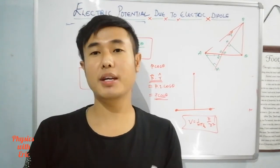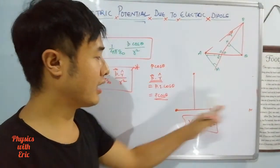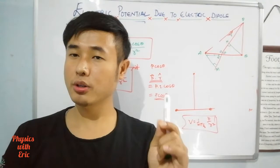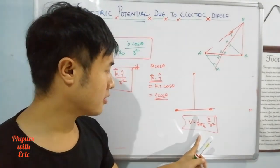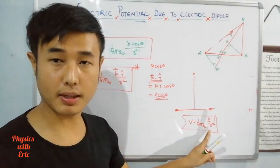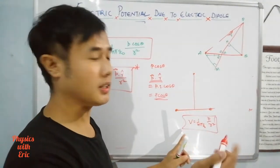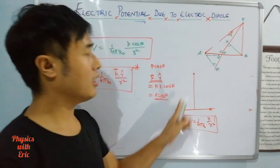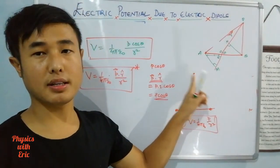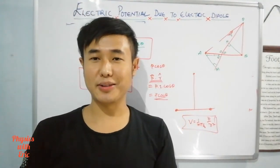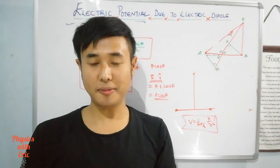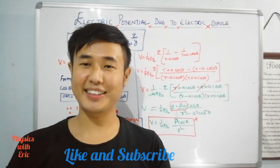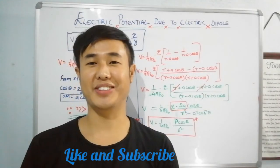Along the axial line from 0 to 180 degrees, the potential varies between positive and negative values. At 180 degrees the potential is negative, and at the equatorial point it is zero. So thank you for watching, hope you all got it, see you in the next video.